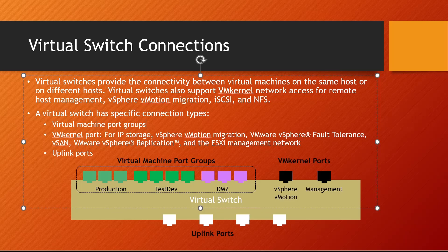You can have a total of 4096 standard switch ports per host, and 512 port groups per switch. So if you create a switch, you can have 512 port groups. These 512 port groups closely match the VLAN concept. On a physical switch, you manage switch ports by creating VLANs and tagging those frames — in layer 2 we call them frames, not packets. In the same way, on a virtual switch, we can create 512 port groups.